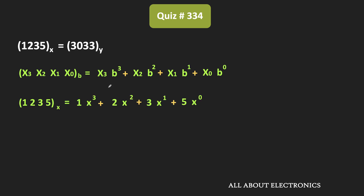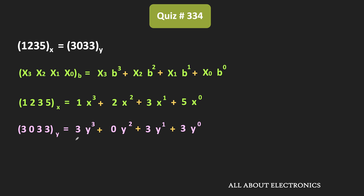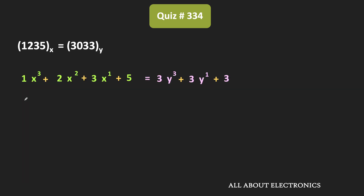In this case, 1235 can be expressed as x³ plus 2x² plus 3x plus 5. Similarly, 3033 can be expressed in decimal as 3y³ plus 3y plus 3. Since these two numbers are equal, we can equate these two expressions — that means x³ plus 2x² plus 3x plus 5 is equal to 3y³ plus 3y plus 3.